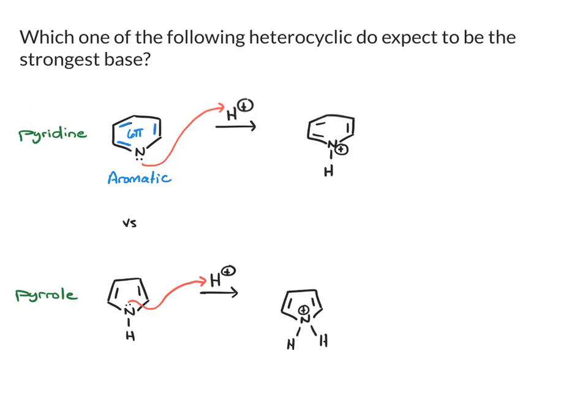Once we get to the product, we still have 2, 4, 6 pi electrons. Even though nitrogen's lone pair was used up, it wasn't involved in the aromaticity to begin with, so it doesn't really change anything. This is still an aromatic system. So there's no huge jump in stability, but there's also no real loss in stability either.